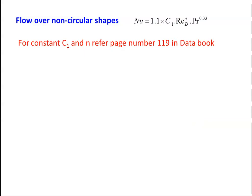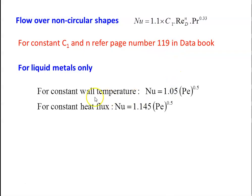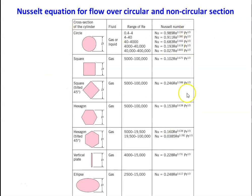For non-circular cross sections: Nu = 1.1 × C₁ × Re^N × Pr^0.33, where constants C₁ and N are from the data book page 119. For liquid metal at constant wall temperature: Nu = 1.05 × Pe^0.5, and at constant heat flux: Nu = 1.145 × Pe^0.5, where Peclet number Pe = Re × Pr. Additional equations are available for specific shapes — square, square tilted, hexagon, hexagon tilted, vertical plate, and elliptical surface — from the heat and mass transfer book by Cengel.